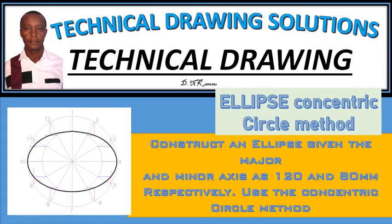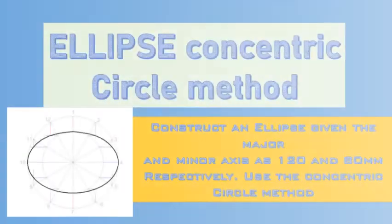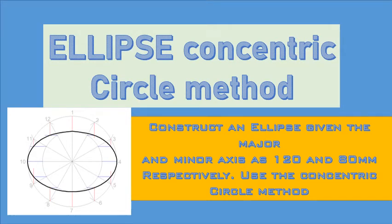Hello and welcome to Technical Drawing Solution. Today I'm going to take you through construction of an ellipse using the concentric circle method. The question reads: construct an ellipse given the major and minor axis as 120 and 80 millimeters respectively. Use the concentric circle method.